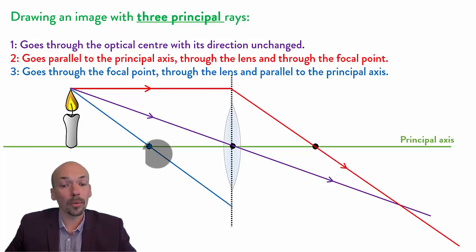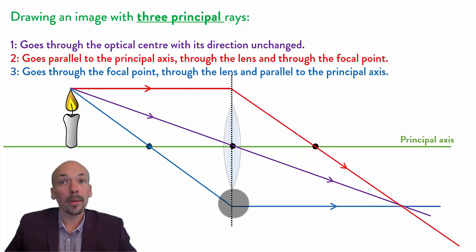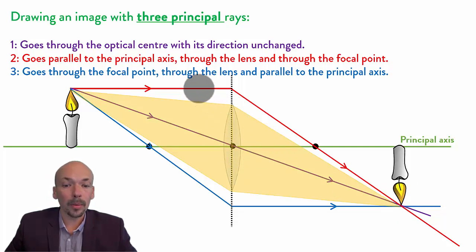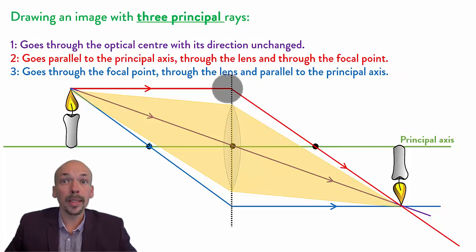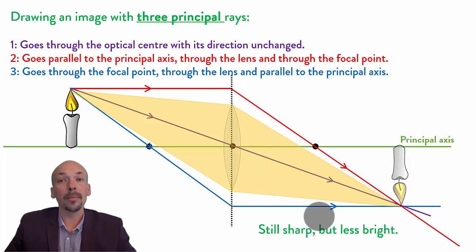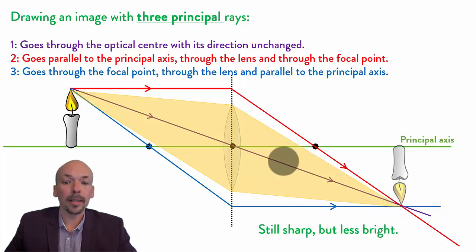The third one will also go through the focal point. Here it does not hit the lens, but again it doesn't matter because it's one of the three principal rays. It will go parallel to the principal axis, and you can see they all meet — they intersect. So here we have the image. In real life, the rays that don't hit the lens will go straight on, but we need to use them for drawing the image. Less light is going through, so the image will be a little less bright, but it will still be sharp.